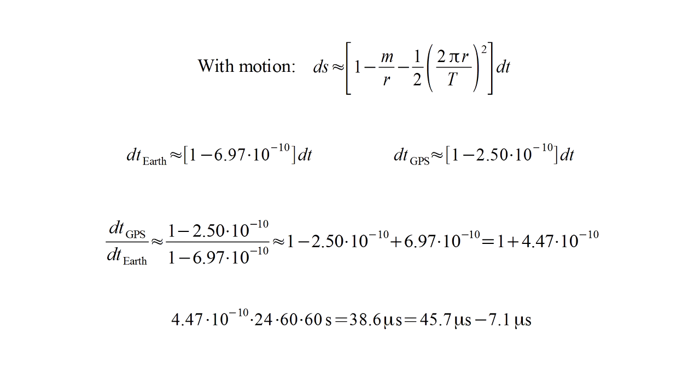On the one hand, GPS clocks run faster because they are at a higher gravitational potential. On the other hand, they run slower because they are moving relatively faster. But the gravitational effect more than offsets the motion effect. This difference in clock rates is indeed observed and must be taken into account for the GPS system to properly function. Thus, the GPS system provides continuous, precise experimental verification of the general theory of relativity.